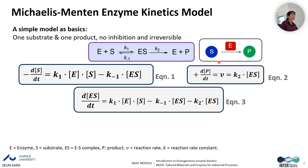When working with the Michaelis-Menten kinetics model, we track the reaction components. First, the substrate: the change in the substrate concentration over time, with the minus sign indicating consumption or conversion of the substrate, is equal to K1 multiplied by E multiplied by S, minus K-1 multiplied by ES. This is equation number one.